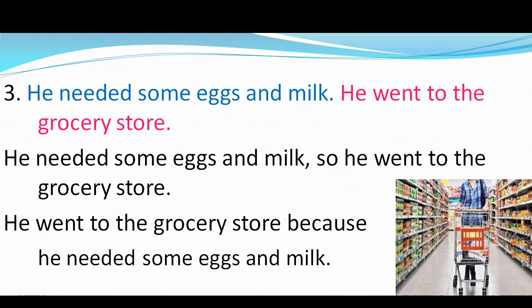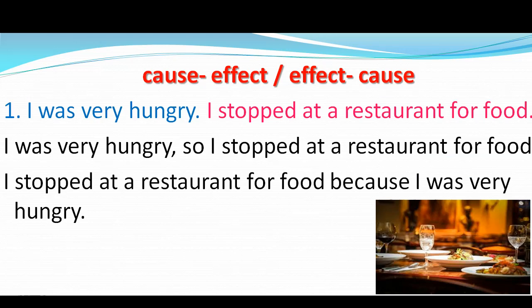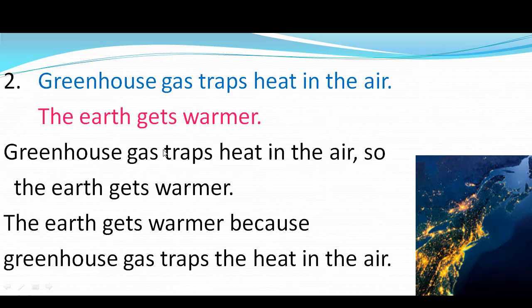These are some examples of effect cause and cause effect. I was very hungry, so I stopped at a restaurant for food. I stopped at a restaurant for food because I was very hungry. Greenhouse gas traps heat in the air, so the earth gets warmer. The earth gets warmer because greenhouse gas traps the heat in the air.